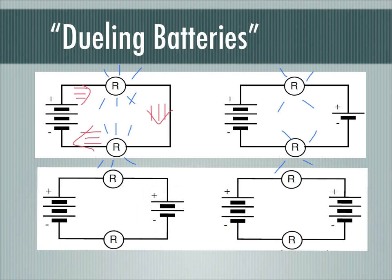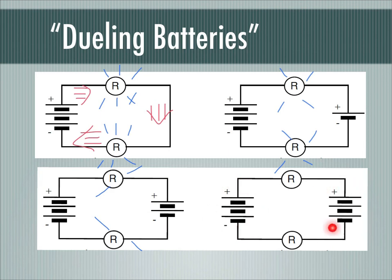Then we added another opposing battery, so now I had two batteries pushing this way and three pushing this way, and this was even dimmer. It seemed like the batteries were fighting instead of adding. Finally, we put in the same battery pack as we had over here — this battery pack pushed backwards and this one pushed forwards — and these light bulbs were not even lit at all. We called that dueling batteries because the batteries are working against each other.